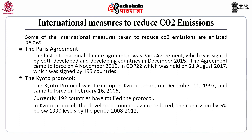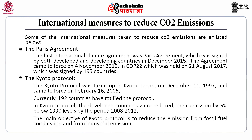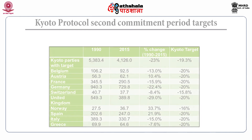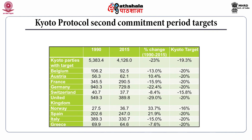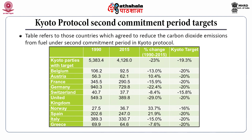In the Kyoto Protocol, developed countries committed to reduce their carbon dioxide emission by 5% below 1990 levels during the period 2008–2012. Though it was not fully successful, the main objective was to reduce emissions from fossil fuel combustion and industrial emission. This table shows the Kyoto Protocol's second commitment period targets by various countries, listing 1990 and 2015 levels as well as the percentage change.